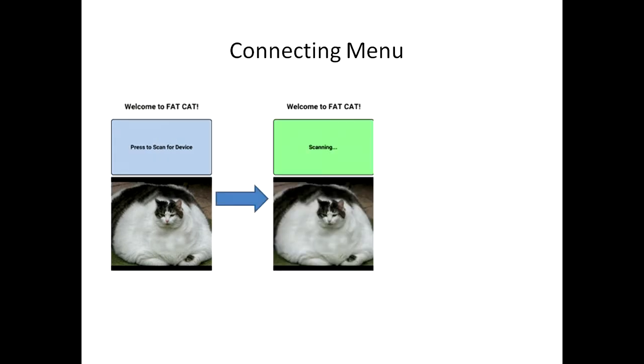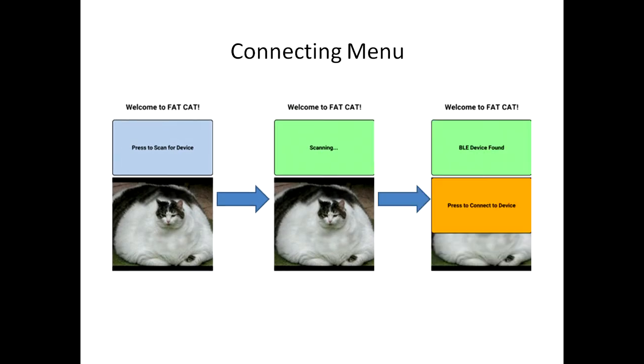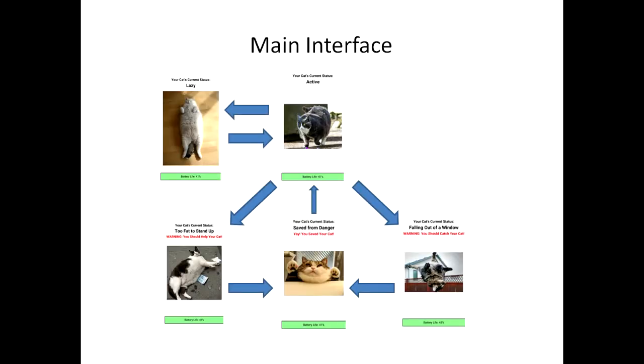So here's an overview of the app we created using QT software. When opening the app, you will be greeted with the connecting menu, where you will be able to connect to your cat's collar through Bluetooth. Pressing the Bluetooth button will begin the scanning process for the cat collar. Once your device has found the cat collar, you will then be prompted to connect to the device. Once you are connected, you will be taken to the main interface screen, where you will be given information based on your cat's state. The notifications that are seen on this screen follow closely to that of our state machine.